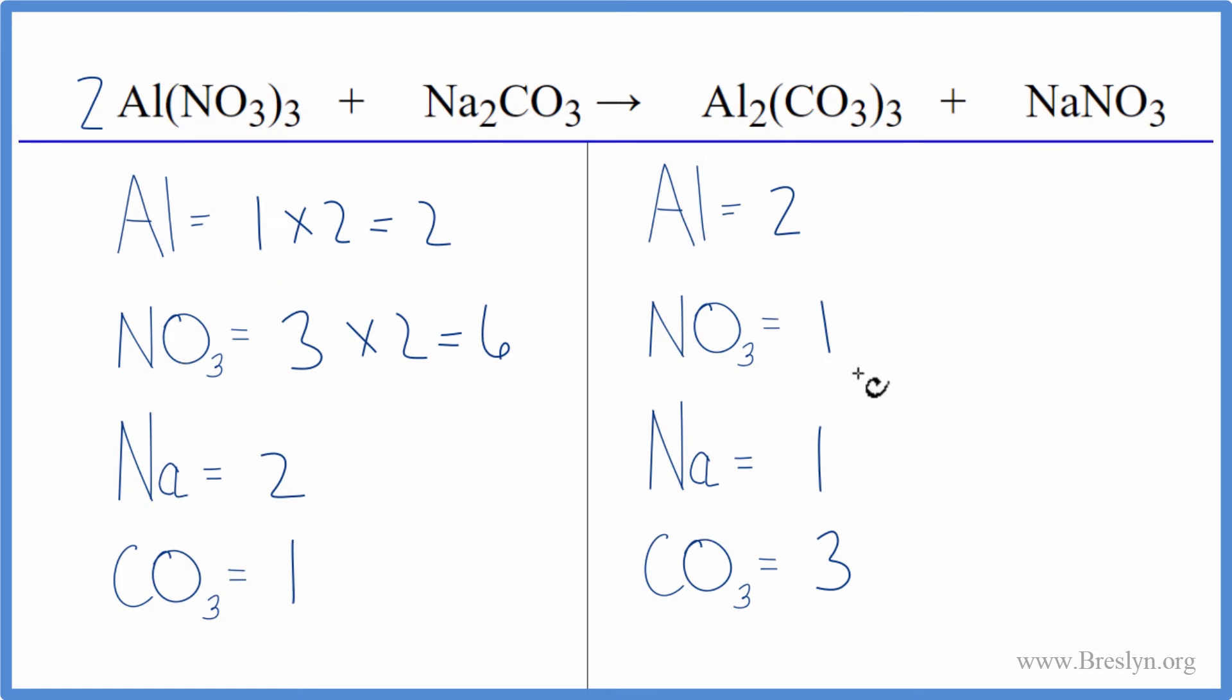Let's balance the nitrates next, we could just put a six in front of the NaNO3, the sodium nitrate. We'd have one times six for the sodium, and we have one nitrate times six here, and that balances the nitrates.